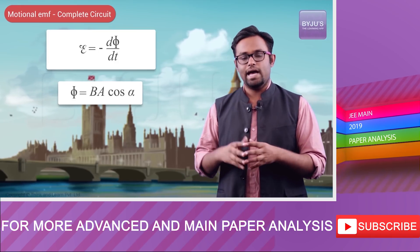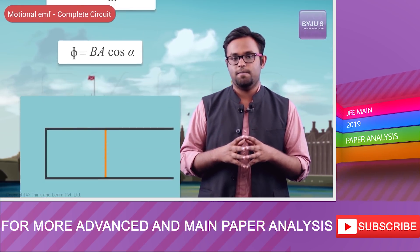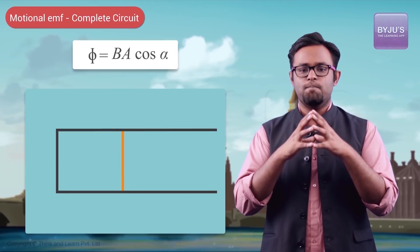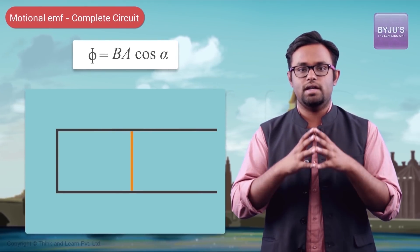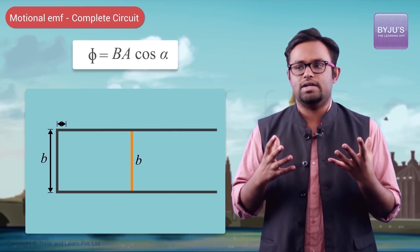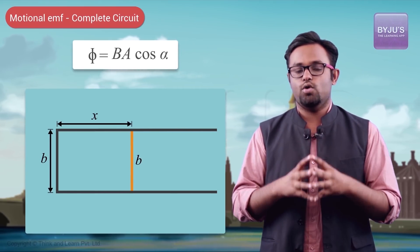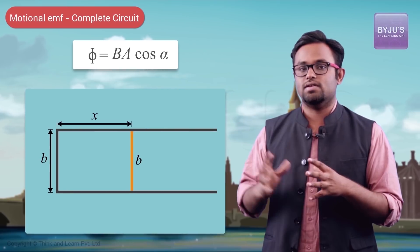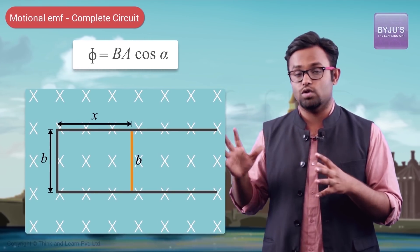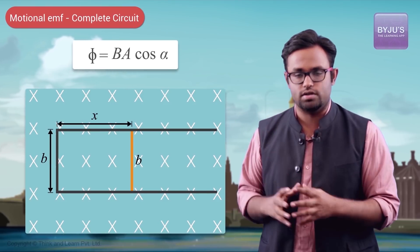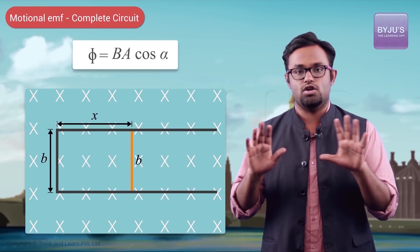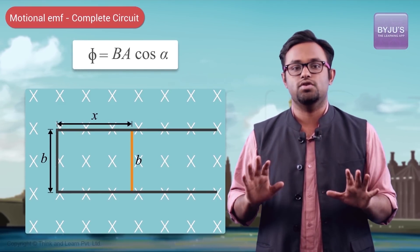Let's take a case like that. Let's say I have a circuit like this, with one of the limbs — one of the wires in the circuit — which is movable. Let's say those sides have a length of B and this is some length X. I have placed this loop, the circuit, in a magnetic field which is into the plane, represented by those crosses. Now I'm not changing the magnetic field at all.